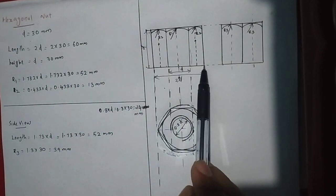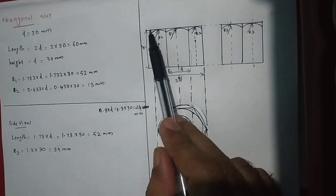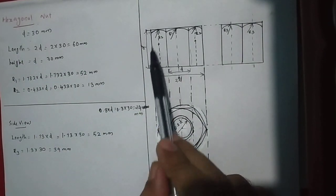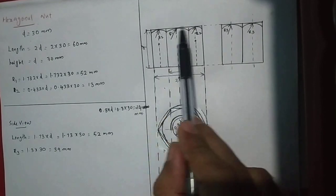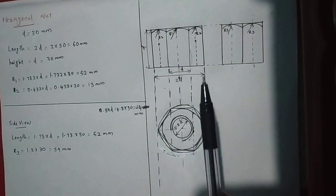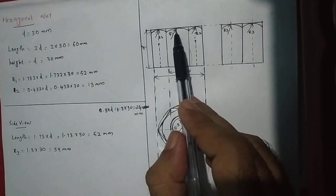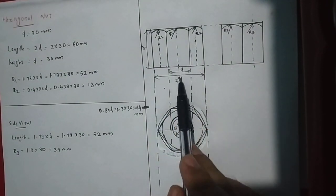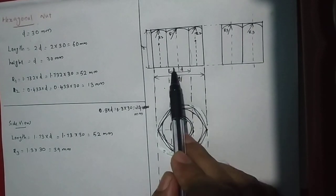Now we can write this. Here is D. Height D — here is 35, we have 30, here is 30, here is 30. We want to create this box. We will write the center line — it is the center line.